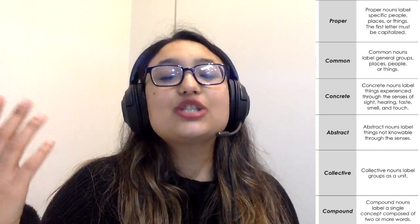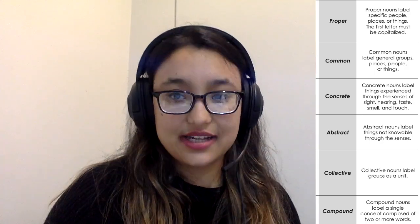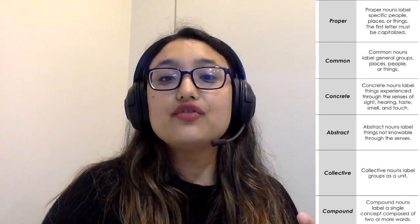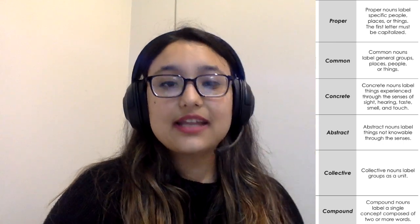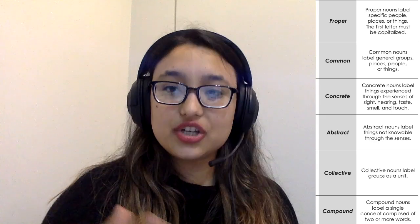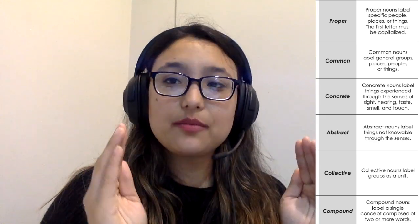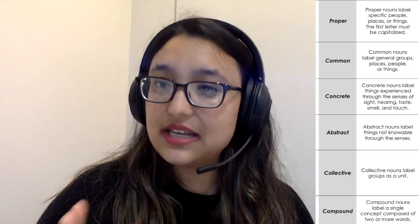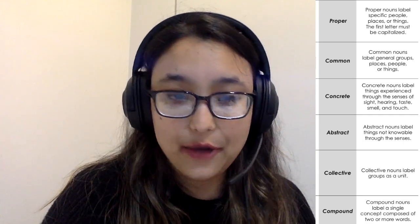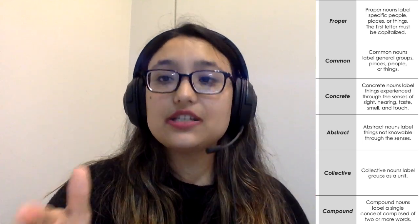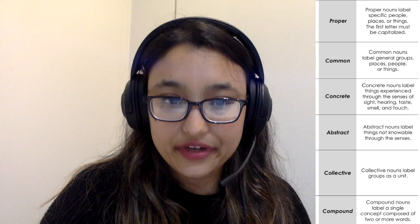Abstract nouns are experiences not done by our sense organs - that is called an abstract noun. Love, hate, anger - these will come up again in coming chapters. Now collective nouns - a collection. Collective nouns label groups as a unit. For example, family is a group of people, or community - community is a collective noun.